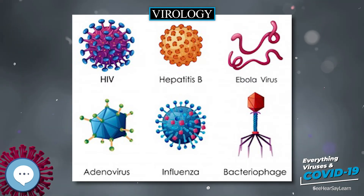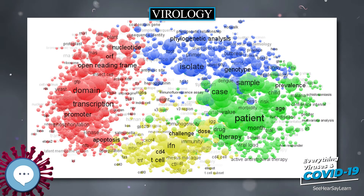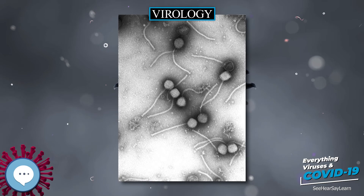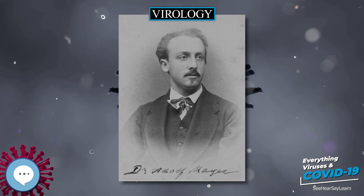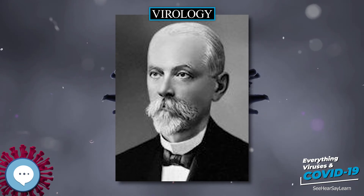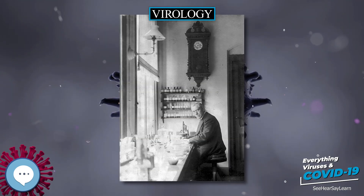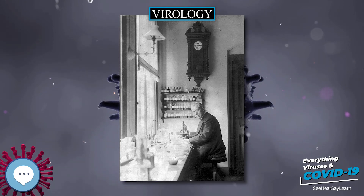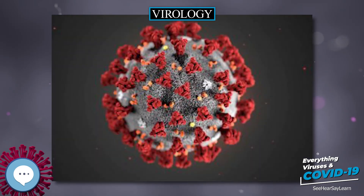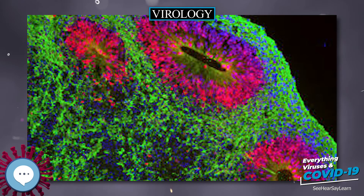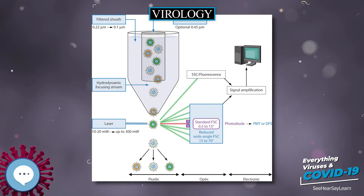The word virus appeared in 1599 and originally meant venom. A very early form of vaccination known as variolation was developed several thousand years ago in China, involving the application of materials from smallpox sufferers in order to immunize others. In 1717, Lady Mary Wortley Montagu observed the practice in Istanbul and attempted to popularize it in Britain, but encountered considerable resistance. In 1796, Edward Jenner developed a much safer method, using cowpox to successfully immunize a young boy against smallpox, and this practice was widely adopted. Vaccinations against other viral diseases followed, including the successful rabies vaccination by Louis Pasteur in 1886.